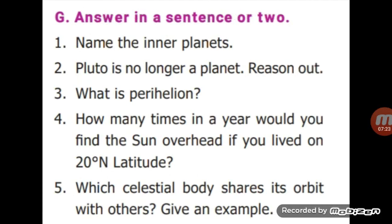Next, answer in a sentence or two. First question: name the inner planets. The four planets nearer to the sun are called inner planets or terrestrial planets. They are Mercury, Venus, Earth and Mars. Next question: Pluto is no longer a planet. Reason out. Answer: Pluto is now classified as a dwarf planet because it has not cleared the neighborhood of its orbit. It shares its orbit with other celestial bodies.